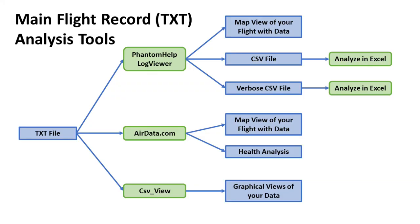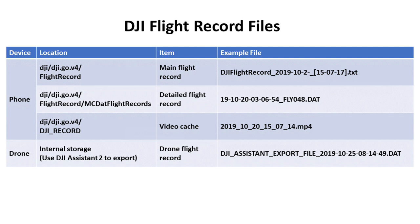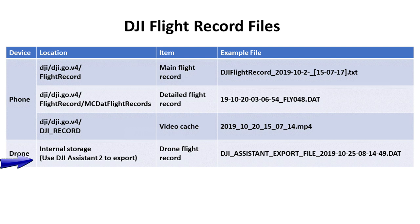There are three ways to visualize and analyze the data in the main flight record TXT file. The video cache files are simply MP4 files — regular movie files — so you can have a look at those whenever you want, assuming you have your video cache turned on. The fourth item is a form of DAT file in a proprietary format that I believe only DJI has the keys to unlock. That's useful to have if you're in a discussion with the DJI support team — they will expect you to be able to provide that file to them.